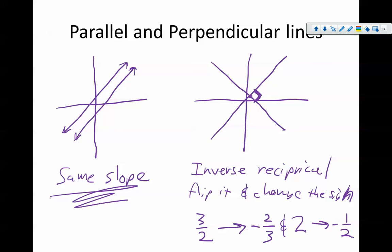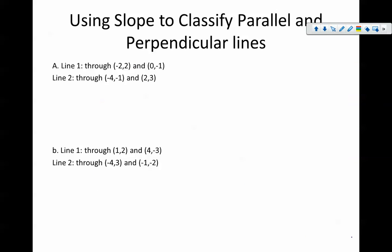So let's do a few examples here. We've got two lines. One line that goes through the points negative two comma two and zero comma one, and the second line goes through negative four comma negative one and two comma three. Are these lines parallel, perpendicular, or neither?